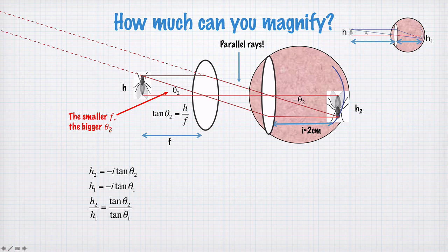Now, the smaller f, the bigger theta2 will be. So this tells you straight away, lenses with a smaller focal length will make theta2 larger. Because as f gets smaller, theta2 will get larger. So tan theta1, remember, was h on 15 cm. Tan theta2 is h on f.